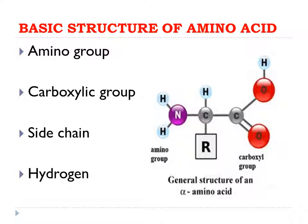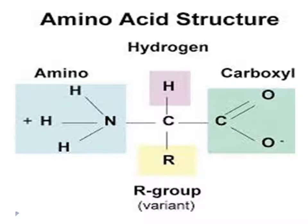If we replace the R group with a hydrogen atom, it becomes glycine — the simplest amino acid — containing one carboxylic group, one amino group, and two hydrogen atoms. Every amino acid contains at least one amino group, one carboxylic group, and one hydrogen atom, and the side chain denoted by R is different for every amino acid.